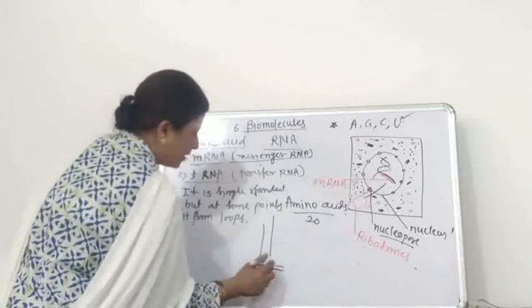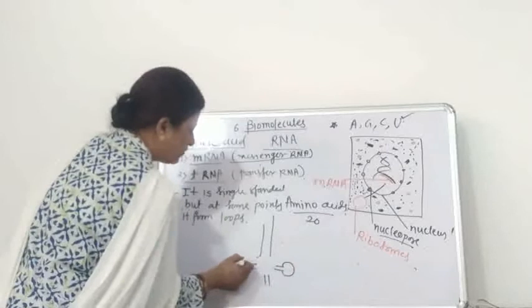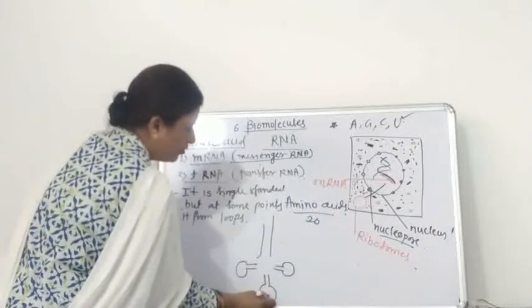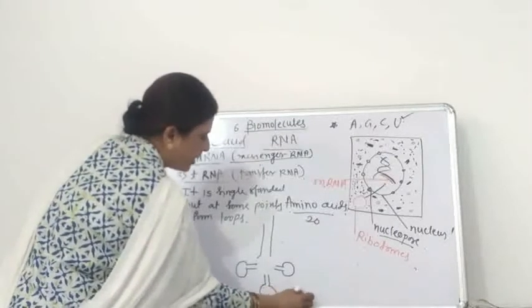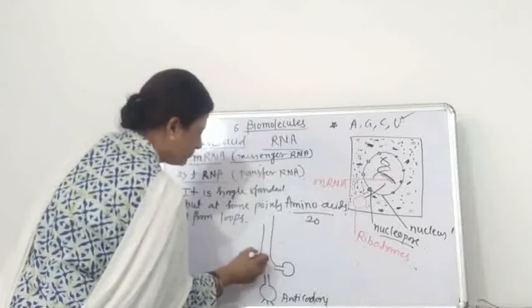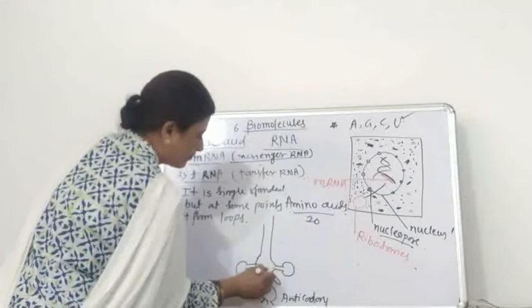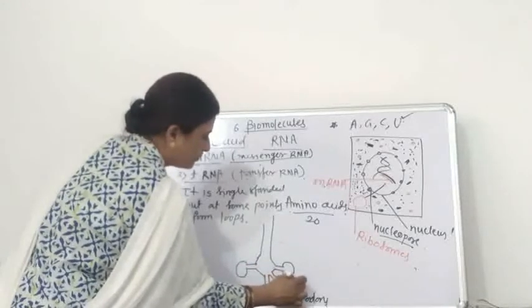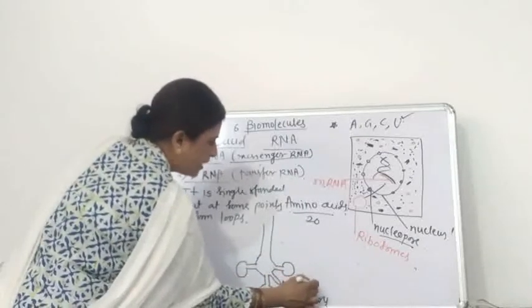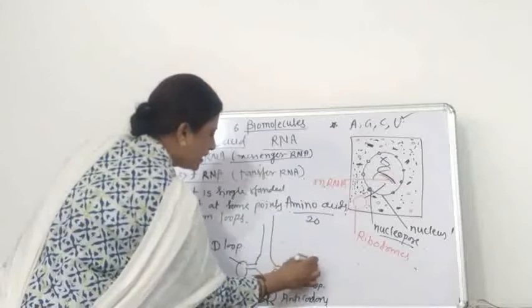In this tRNA molecule, three loops are present — this is the first, second, and third loop. In the third loop, the anticodons are present. This is called the minor loop or mini loop. The first loop is the D loop, and the second is the T loop.